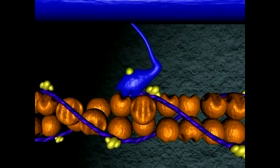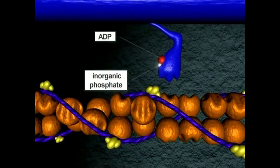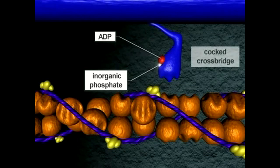After ATP binds, it is split to ADP and inorganic phosphate. The energy derived from this reaction is utilized to cock the cross-bridge in preparation for the power stroke.